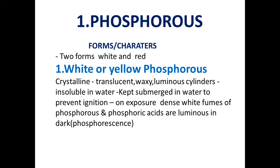Number one: white or yellow phosphorus — white and yellow are the same. Its properties are: it is crystalline, translucent, waxy, luminous, and splendorous. It is insoluble in water and should be kept submerged in water to prevent ignition, because if kept outside it may catch fire in the presence of oxygen. On exposure, it produces dense white fumes of phosphorus and phosphoric acid which are luminous in the dark — a property called phosphorescence.